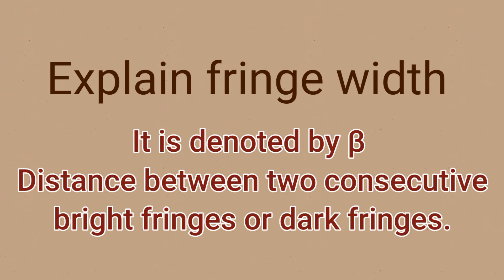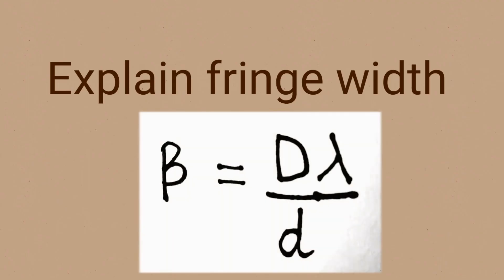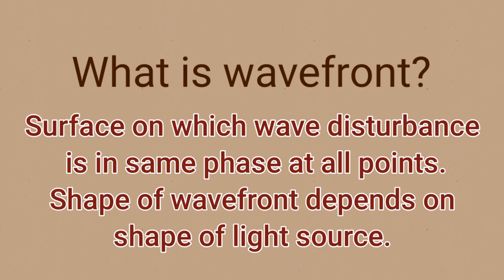Explain fringe width. It is denoted by the letter beta and is the distance between two consecutive bright fringes or two consecutive dark fringes. Beta is given as capital D upon small d times lambda.